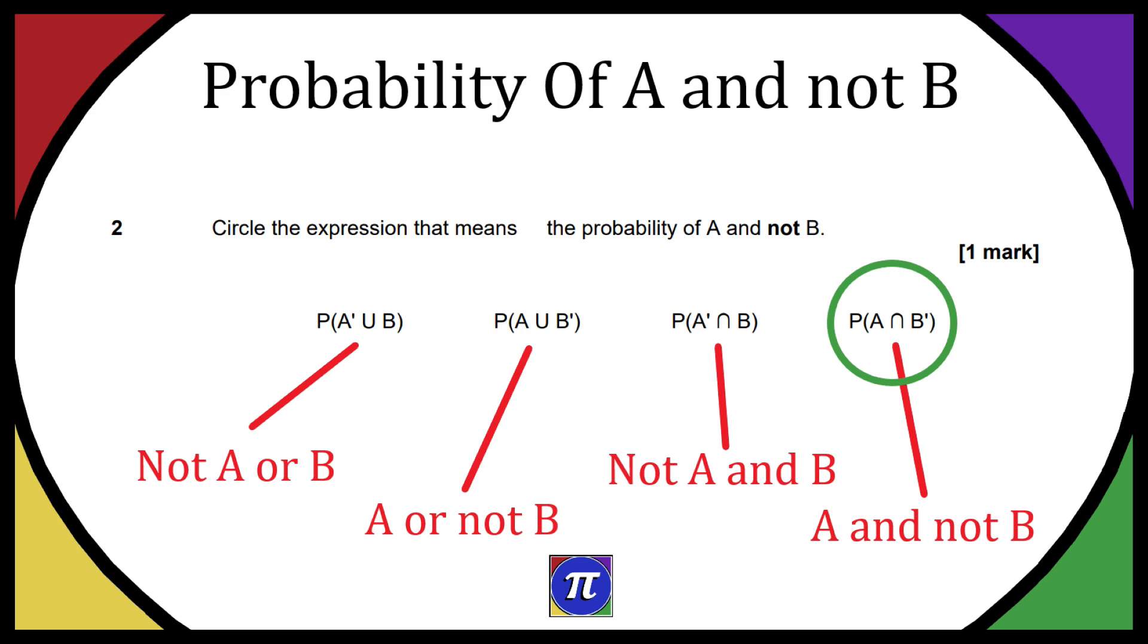Hopefully that made sense. Hopefully that was clear. Just to run through again, if it has a dash it means not that letter. The U means or and the N means and. Okay, best of luck with your math. Thanks for watching and you can leave any comments or questions below.